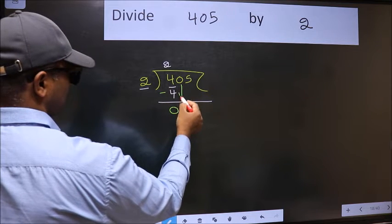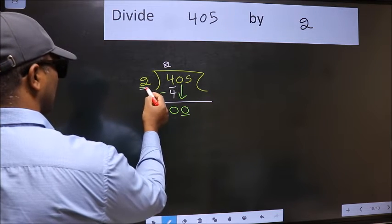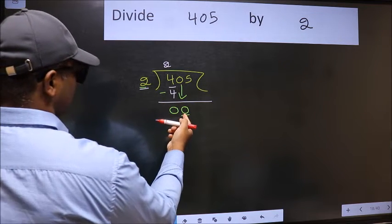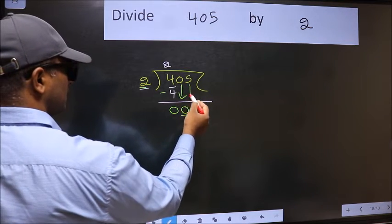After this bring down the next number. So 0 down. Now here we have 0 and here 2. 0 is smaller than 2. So we should bring down the second number.